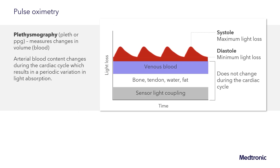We do that by focusing in on the pleth. The pleth is created because arterial blood content changes during the cardiac cycle. There are many things that can cause light to be attenuated as it travels from the LED to the detector — how the sensor is constructed, what other tissue is present such as bone, tendon, water, or fat, as well as the blood, and how much venous blood is present. However, it is only the arterial blood that is changing in time. As blood is pushed into the arteries, there is an increase in light loss due to increased absorption, and as it is squeezed out, there is a decrease in light loss due to decreased absorption.